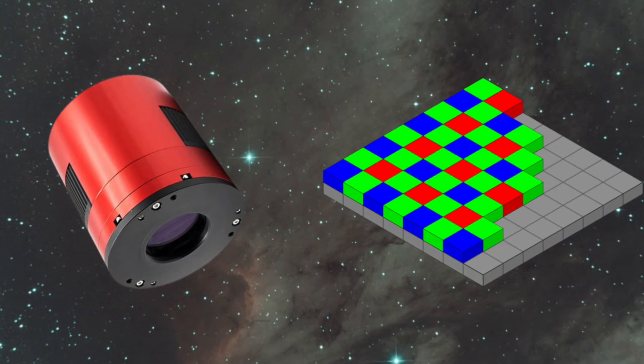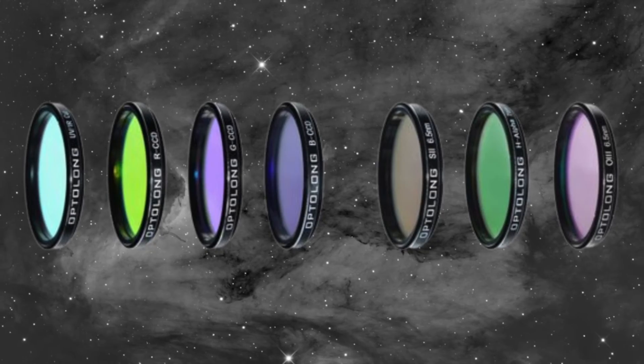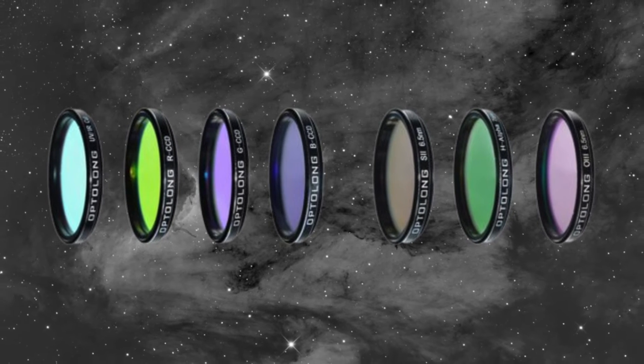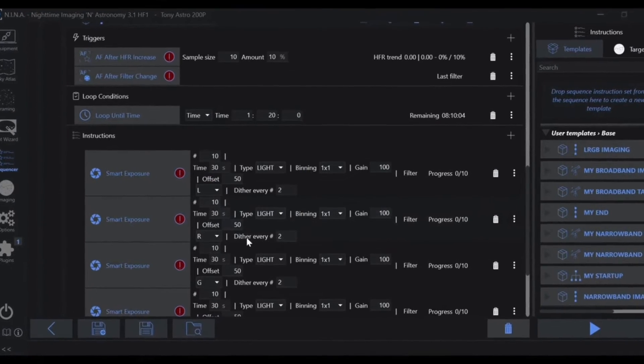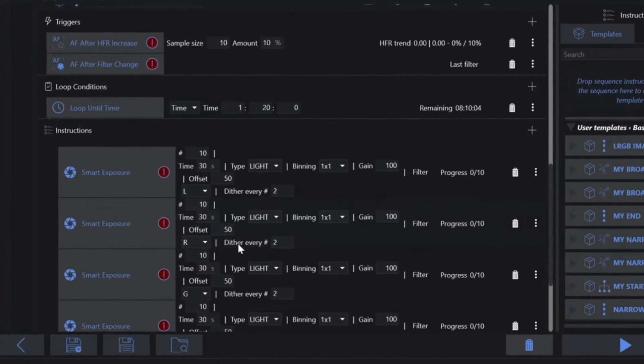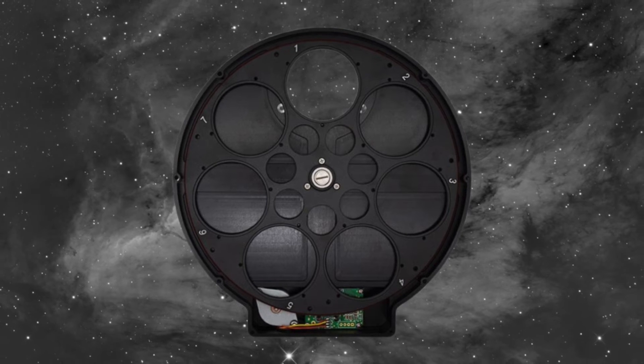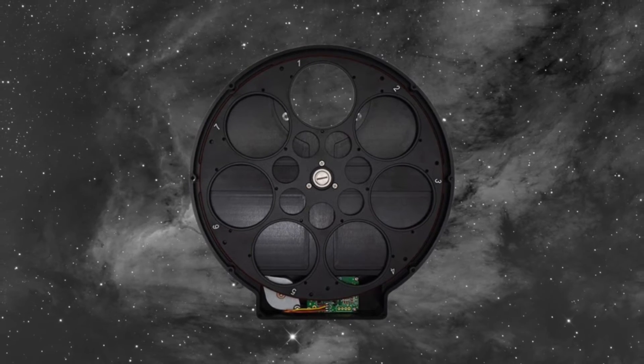Unlike the one-shot color counterpart, which will generally use the same filter, a monochrome camera will need to switch filters in order to get the data that you need, and sometimes this may happen during an imaging session, and sometimes multiple times during an imaging session. The electronic filter wheel allows you to change your filters when you need without disturbing your setup.